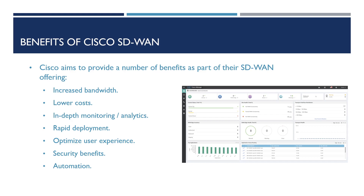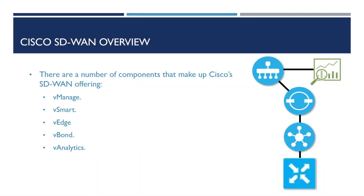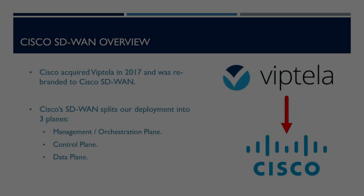Now we understand the benefits that Cisco's SD-WAN offers over our traditional wide area network setups, let's take a look at an overview of Cisco's SD-WAN solution. First things first, Cisco's SD-WAN solution is an overlay architecture — a way of using software to create a logical network that sits on top of our underlay network, this being our physical infrastructure of circuits. SD-WAN also allows us to extend the push towards software-defined networking into a wide area network. There are a number of key components that make up Cisco's SD-WAN offering: vManage, vSmart, vEdge, vBond and vAnalytics.